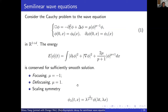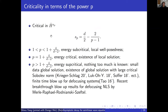This equation has a very simple scaling symmetry: if v is a solution, you can scale it by lambda to the power two over p minus one while also scaling time and position, and v is also a solution of the same equation. When talking about this scaling symmetry, we can also talk about the scaling-invariant critical Sobolev norm, which is invariant when s_p equals d over two minus two over p minus one.